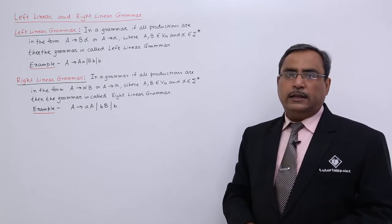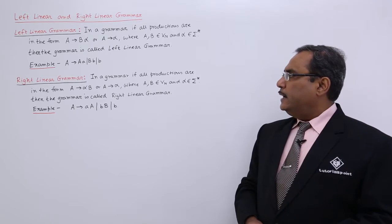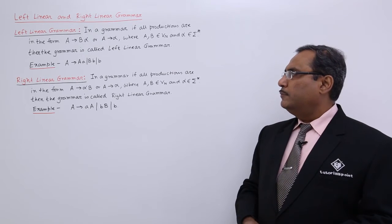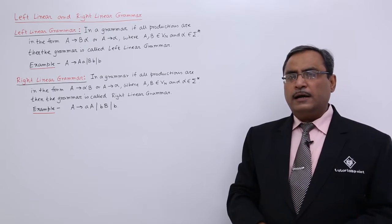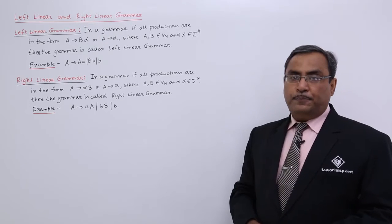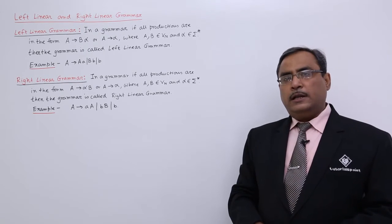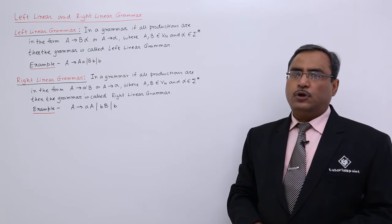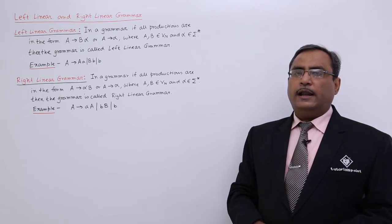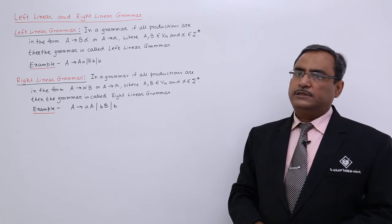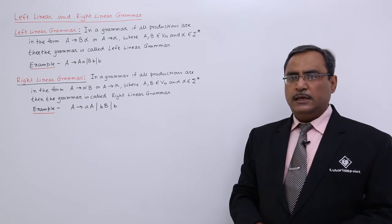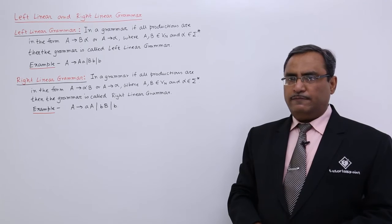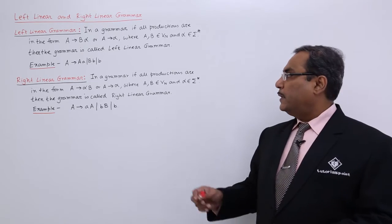Now let us come to right linear grammar. In a grammar, if all productions are in the form A produces alpha capital B, or A produces alpha, where capital A and capital B belong to the set of non-terminals V sub n, and alpha belongs to sigma star — meaning alpha contains a collection of terminal symbols or alphabets including epsilon — then the grammar is called right linear grammar.